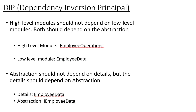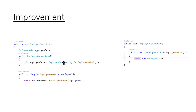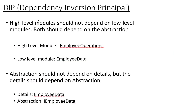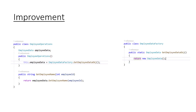Now let's see the DIP principle — the Dependency Inversion Principle. DIP states that high-level modules should not depend on low-level modules; both should depend on abstraction. If you look at our example, EmployeeOperation is the high-level module and it is dependent on EmployeeData, the low-level module. DIP says this is not correct — the high-level module should not depend on the low-level module; rather it should depend on an abstraction of it. So we need to create an interface or abstract class.